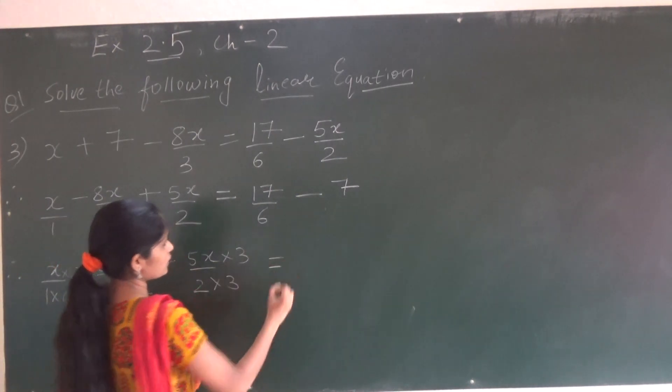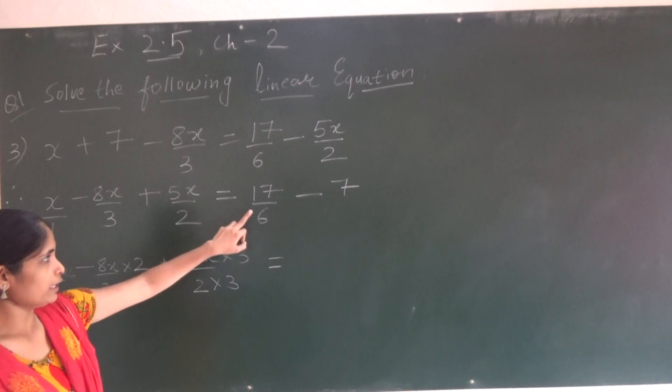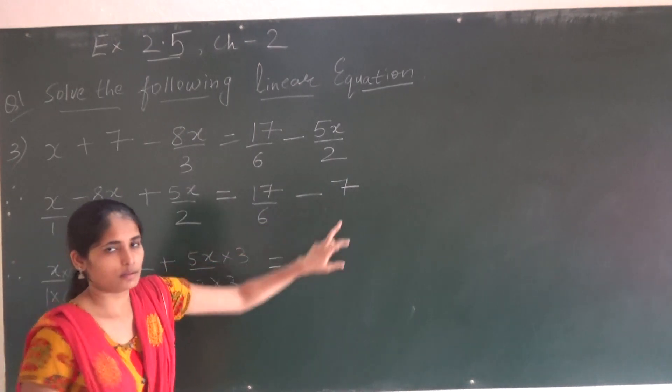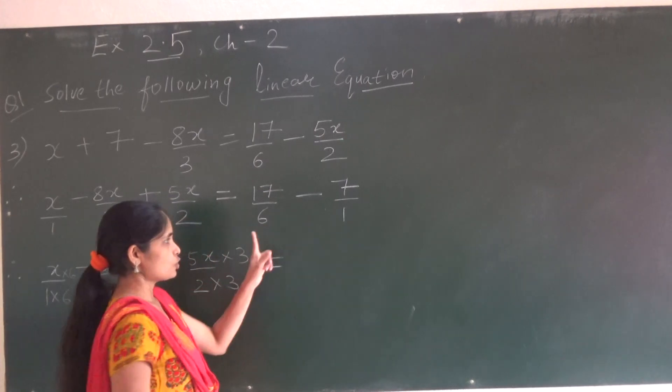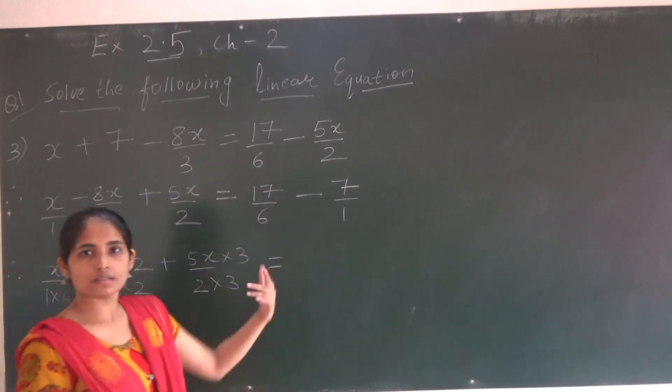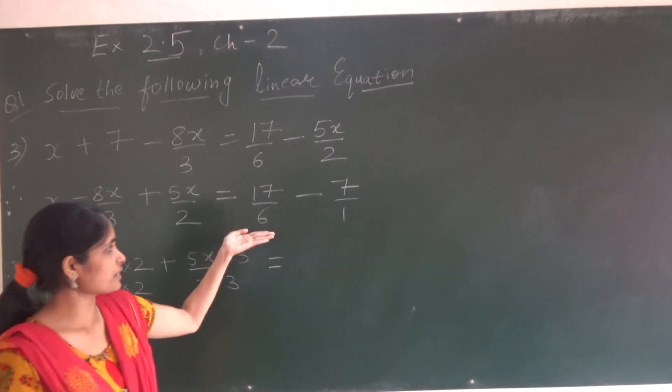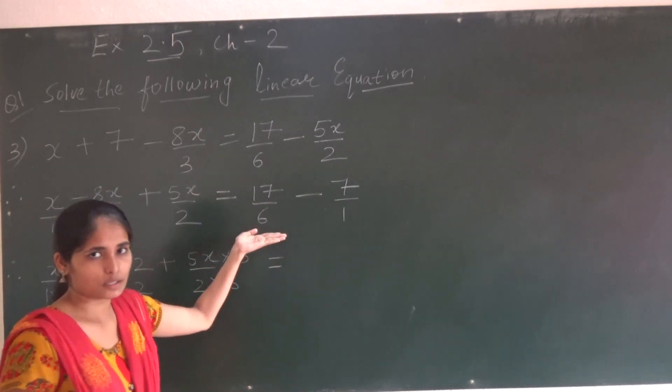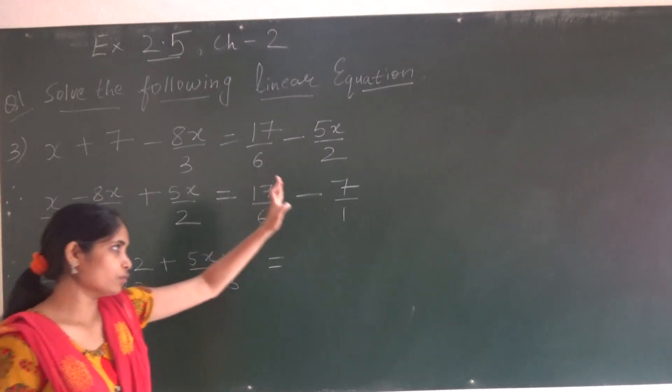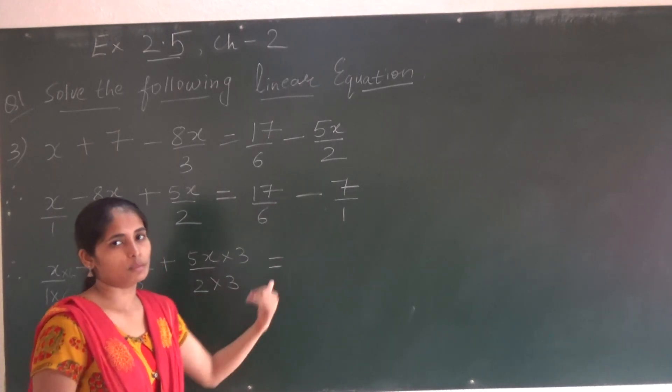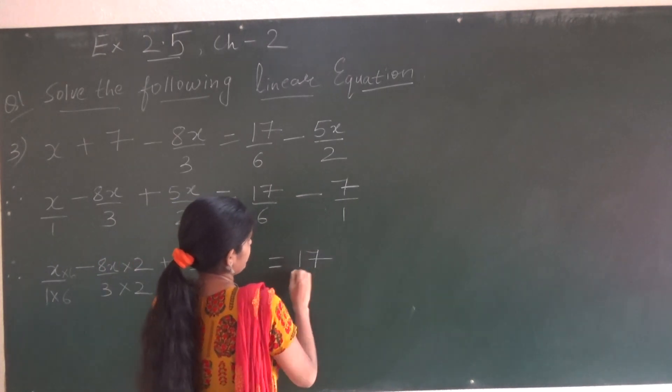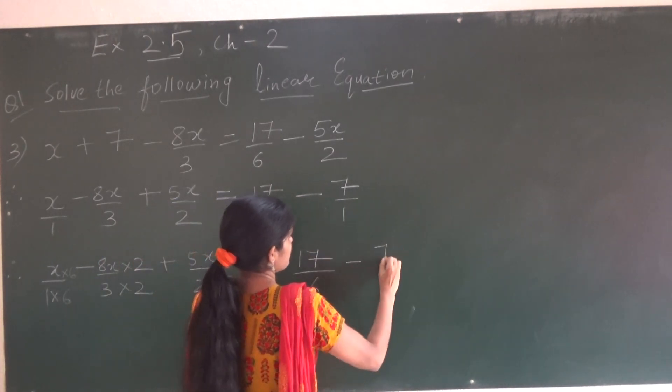Now coming to this side. So here it is 17 upon 6 minus 7. So I am writing upon 1. Now LCM of 6 and 1. So 6 and 1. 6 ones are 6. LCM will be 6. LCM of any number with 1 is the number itself. So 6 and 1, LCM will be 6.